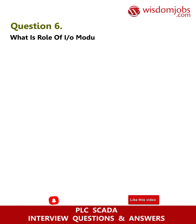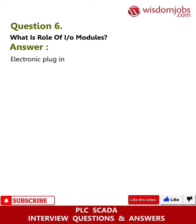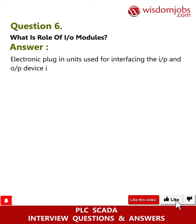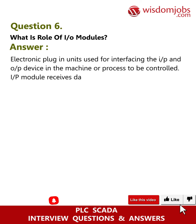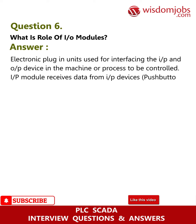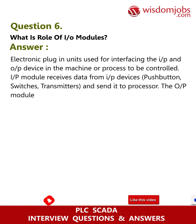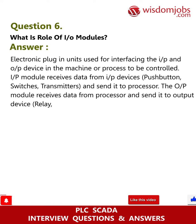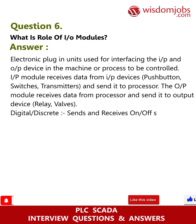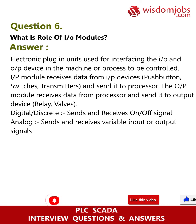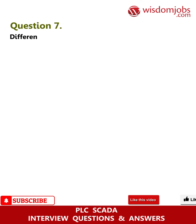Question 6: What is the role of IO modules? Answer: IO modules are electronic plug-in units used for interfacing input and output devices in the machine or process to be controlled. The input module receives data from input devices such as push buttons, switches, and transmitters, and sends it to the processor. The output module receives data from the processor and sends it to output devices like relays and valves. Digital/discrete modules send and receive on/off signals; analog modules send and receive variable input or output signals.